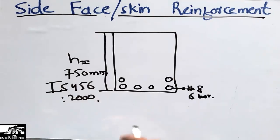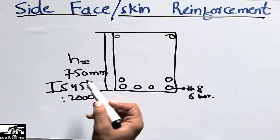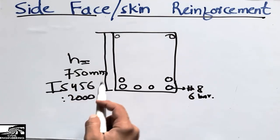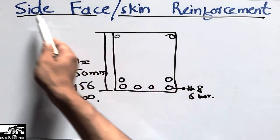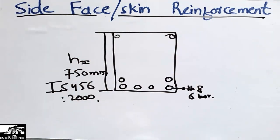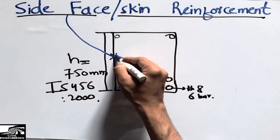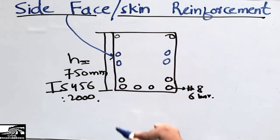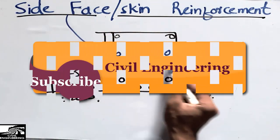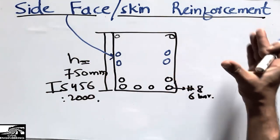When the depth of the beam is equal to or exceeds 750 mm, we place another type of reinforcement. We call this the side face or skin reinforcement. It is called side face reinforcement because it is placed at the sides of the beam — we place the bars along the sides like this.